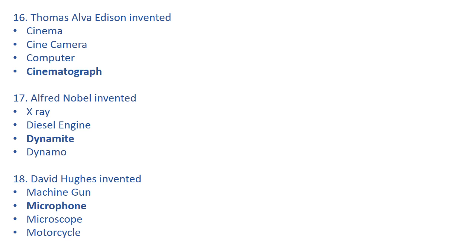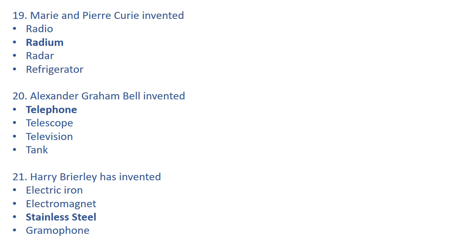David Hughes invented microphone. He belongs from USA and invented the microphone in 1878. Machine gun was invented by Richard Gatling of USA in 1861. Microscope was invented by J. Janssen of Netherlands in 1590. Motorcycle was invented by Edward Butler of England in 1884.